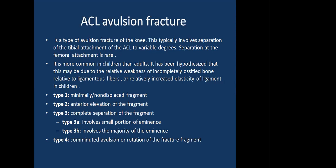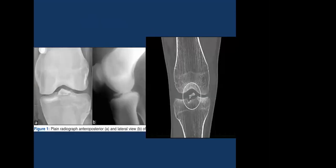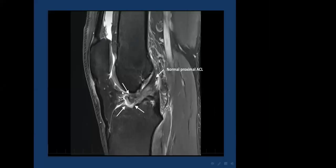ACL avulsion fracture classification: Type 1 is a minimally or non-displaced fragment. Type 2 involves anterior elevation of the fragment. Type 3 is complete separation, either a small portion or the majority. Type 4 is a comminuted avulsion or rotation of the fracture fragment. On AP X-ray a fracture line and separation of the tibial spine are seen, also visible on lateral X-ray but well perceived on CT. MRI shows a normal proximal ACL but avulsed distal ACL with a bone fragment and cortical defect at the tibial insertion site.